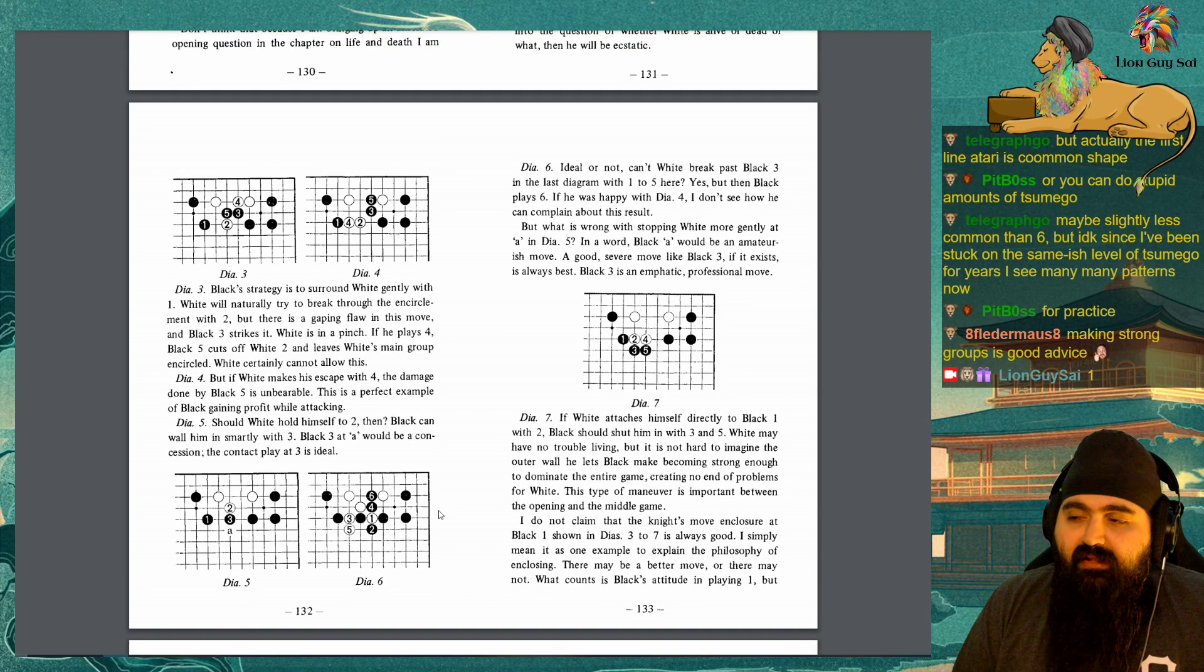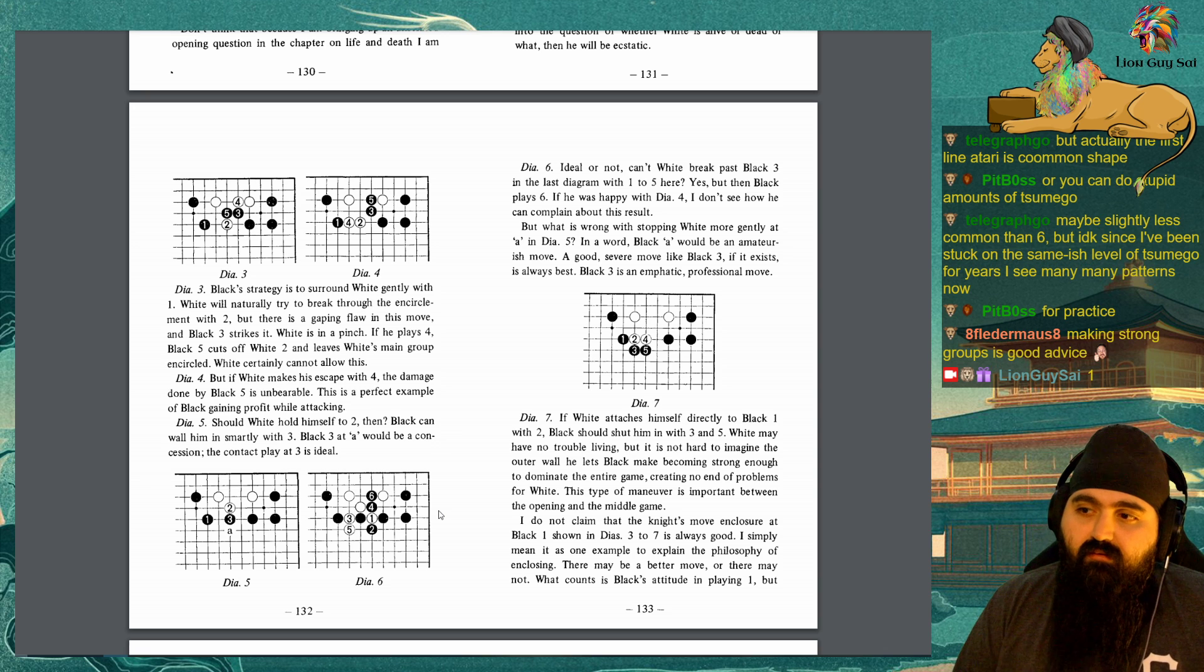One of the Japanese characters used to write the name of the game even means Surround. If Black can surround White successfully and gain outward influence, that is enough. If, at the same time, he can contrive to inject some uncertainty into the question of whether White is alive or dead or what, then he will be ecstatic. Diagram 3: Black's strategy is to surround White gently with 1. White will naturally try to break through the encirclement with 2, but there is a gaping flaw in this move, and Black 3 strikes it. White is in a pinch. If you place 4, Black 5 cuts off White 2 and leaves White's main group encircled. White certainly cannot allow this. Diagram 4: But, if White makes his escape with 4, the damage done by Black 5 is unbearable. This is a perfect example of Black gaining profit while attacking.